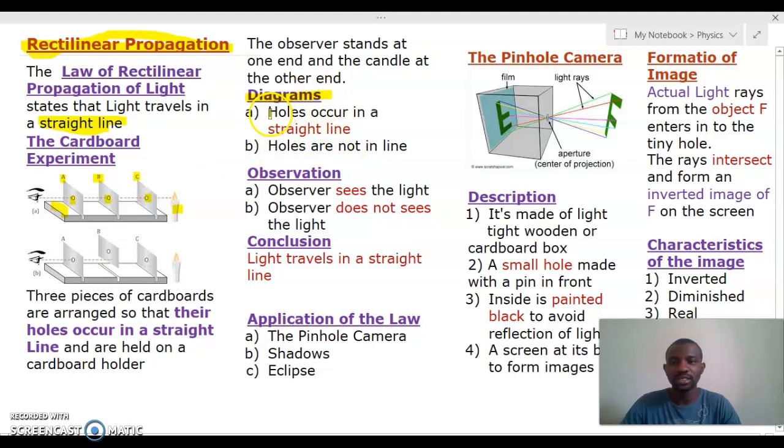Now what does the observer see? In diagram A, the holes are made to occur in a straight line, whereas in diagram B you realize that there is a slight shift in the second cardboard, that is cardboard B, so the holes do not occur in a straight line. What is our observation? In A, the observer sees the light. However, in B, the observer does not see the light.